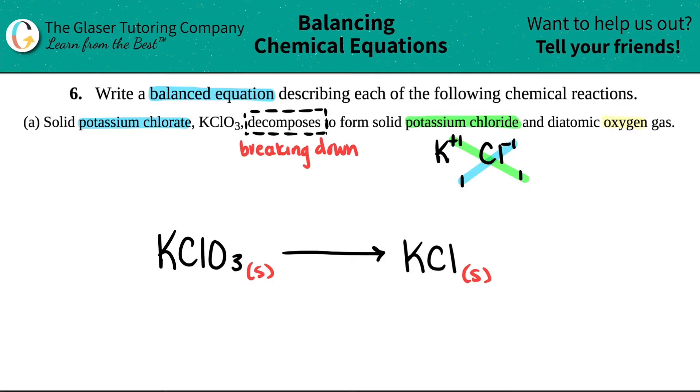Now I move on to the next thing. They said it's going to form solid potassium chloride and, so literally addition, plus diatomic oxygen gas. In chemistry world, di means two. Atomic means atoms. So you have two atoms of oxygen.